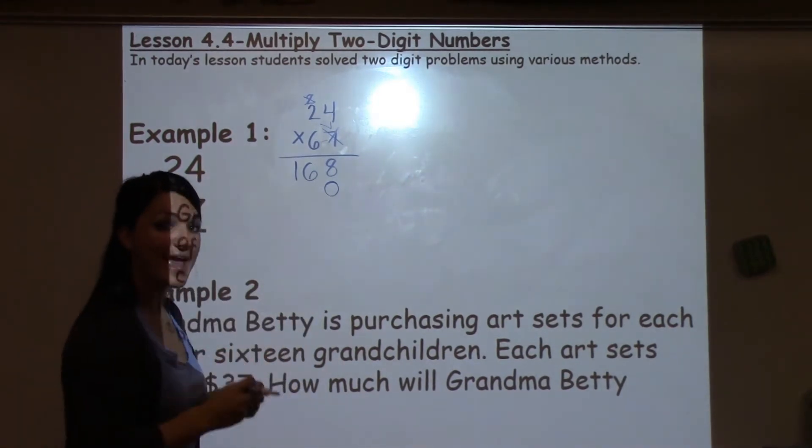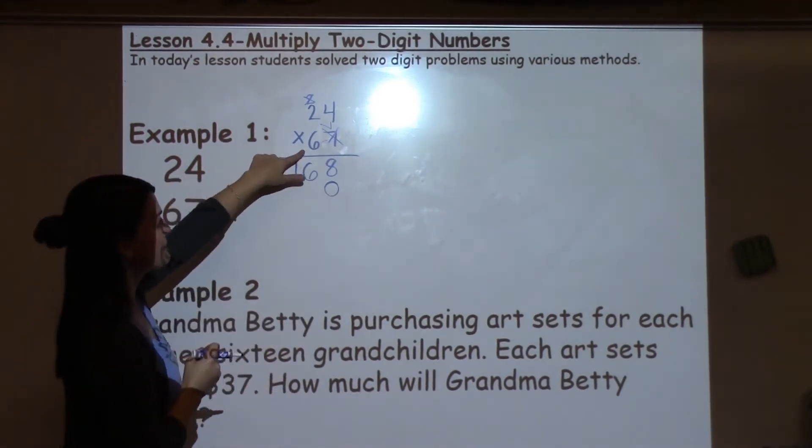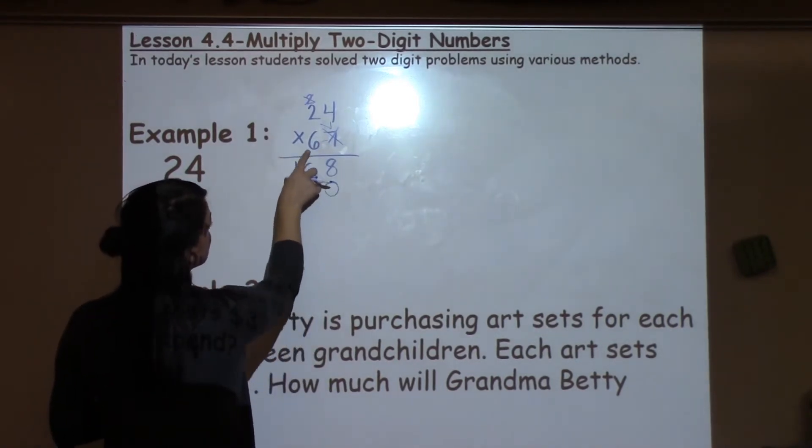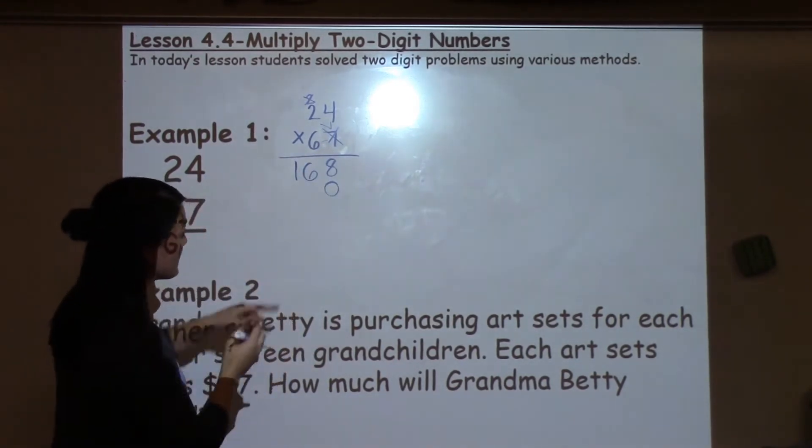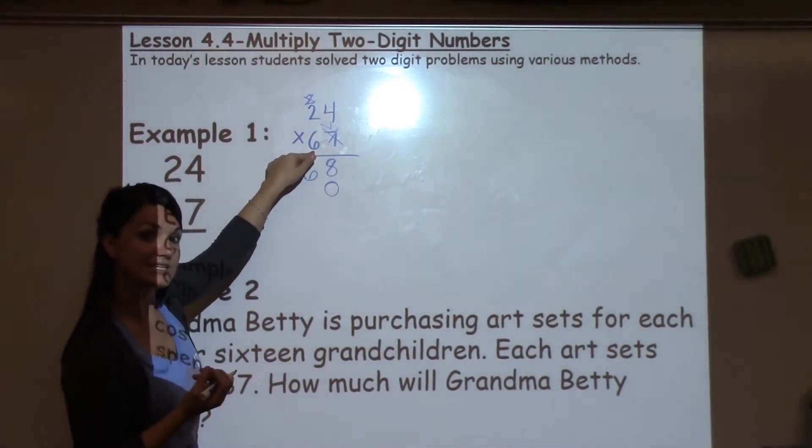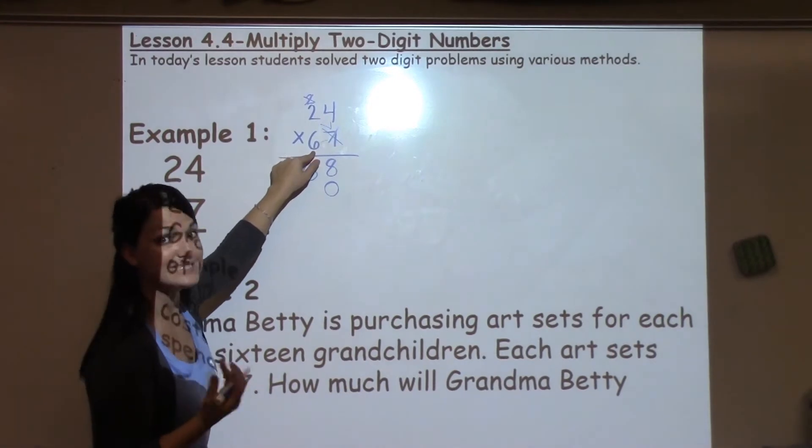Alright, that's our placeholder. We have to have that when we're multiplying by a second digit. So I put my placeholder there because the 6 is in the tens place. So when I multiply by the 6, I'm really multiplying by 60.